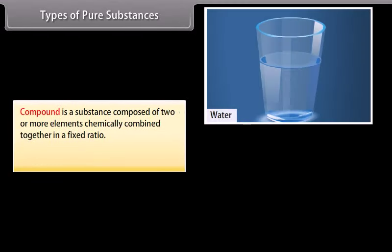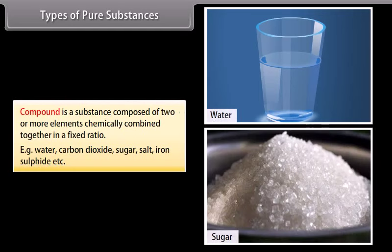Compound is a substance composed of two or more elements chemically combined together in a fixed ratio. Examples include water, carbon dioxide, sugar, salt, and iron sulfide.